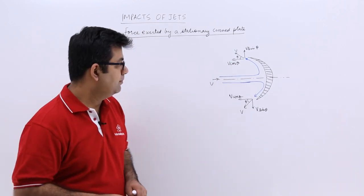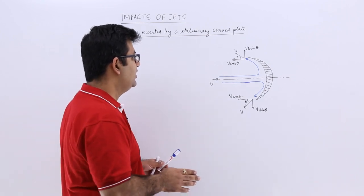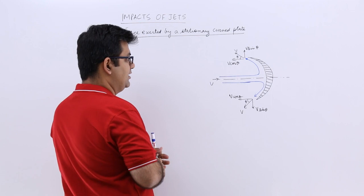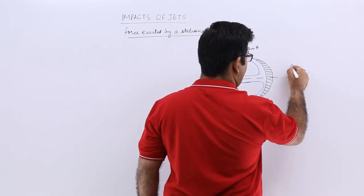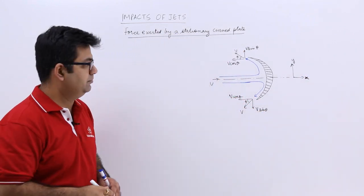Now let's come to the case when the plate becomes curved but it is stationary. In this case the jet of the water is striking in the middle in the x direction. So this is x and this would be y. It is very important to define and understand your coordinate system.